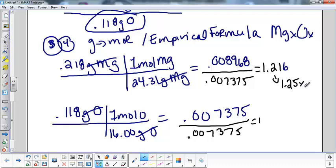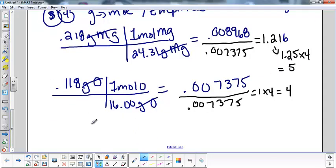Since it's a decimal, I have to multiply it by 4, which means I also have to multiply this one by 4. So my formula that I'm going to get from my data is actually going to be Mg5O4.